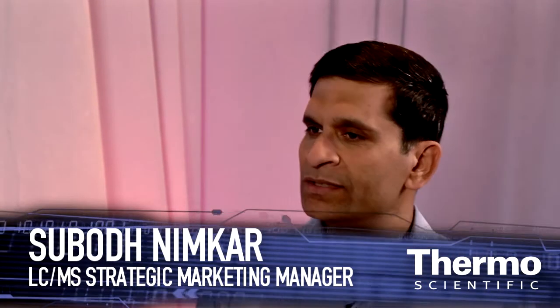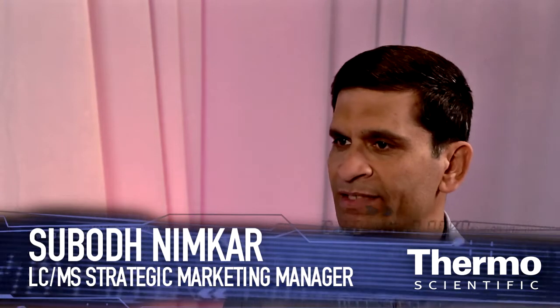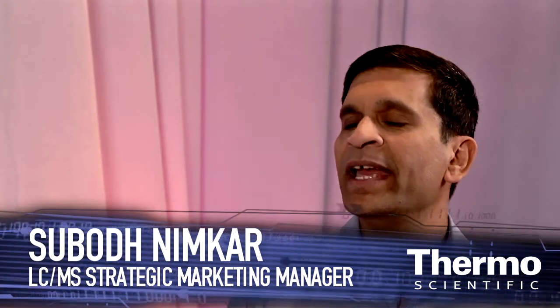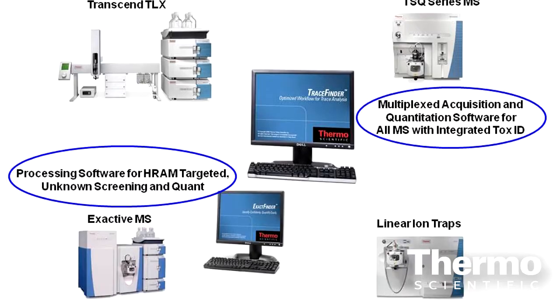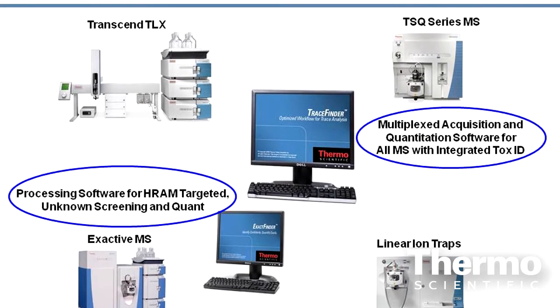TraceFinder 1.1 software that we have released here at ASMS is the next generation software for TraceFinder 1.0. This has been primarily designed for quantitative analysis of all Thermo mass spec systems, including control of our Transcend multiplexing system as well as other HPLC systems.